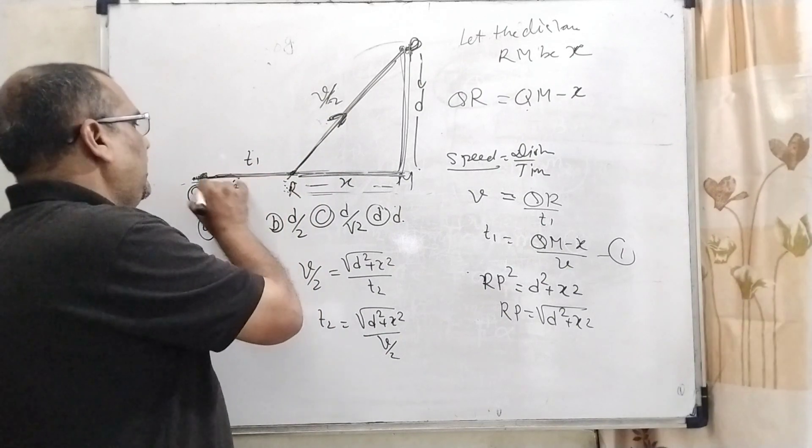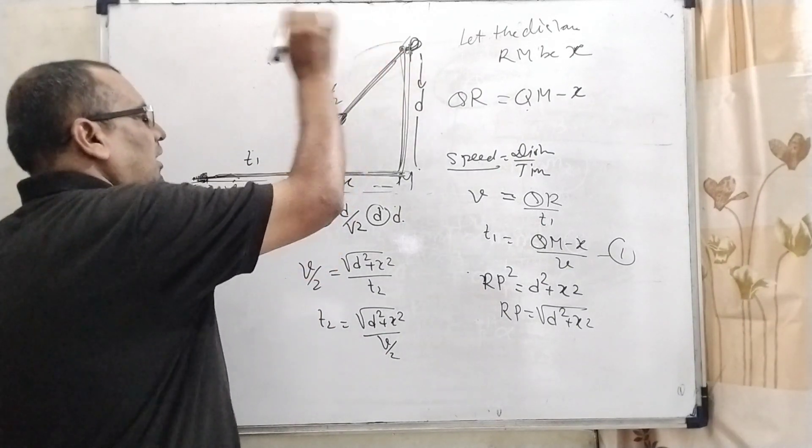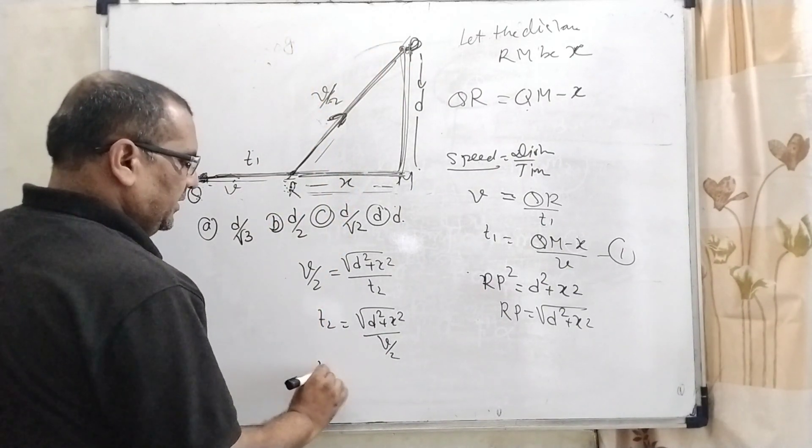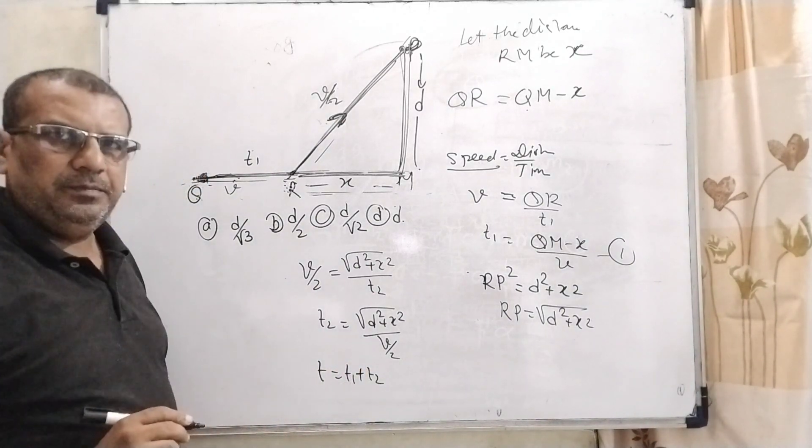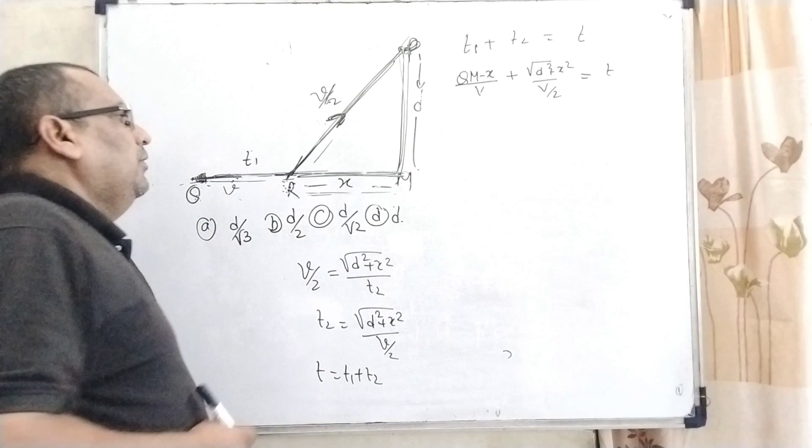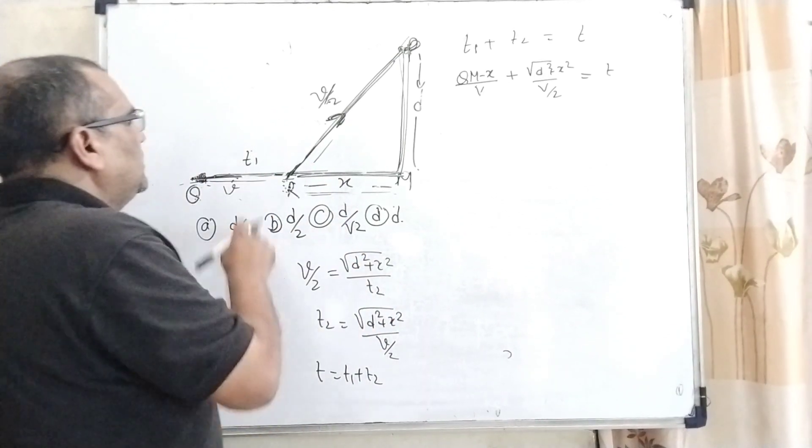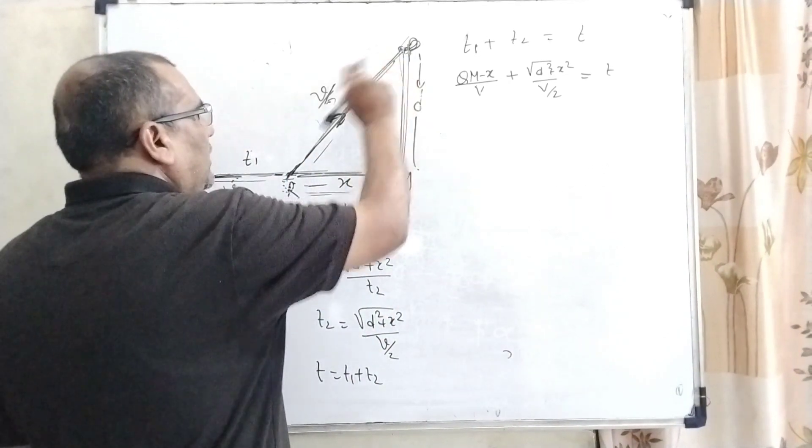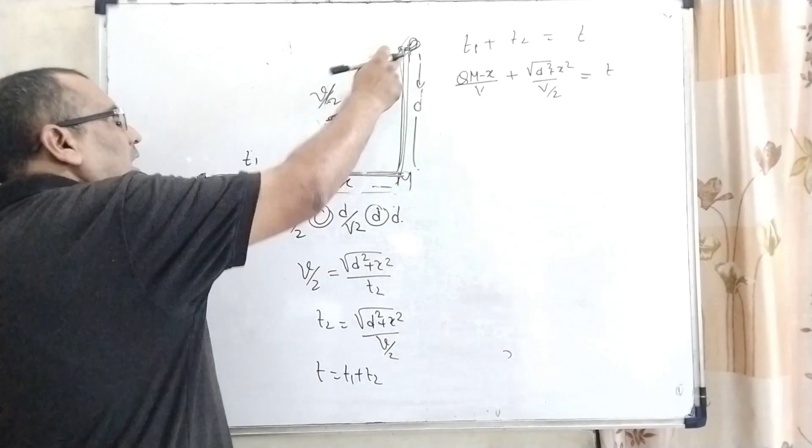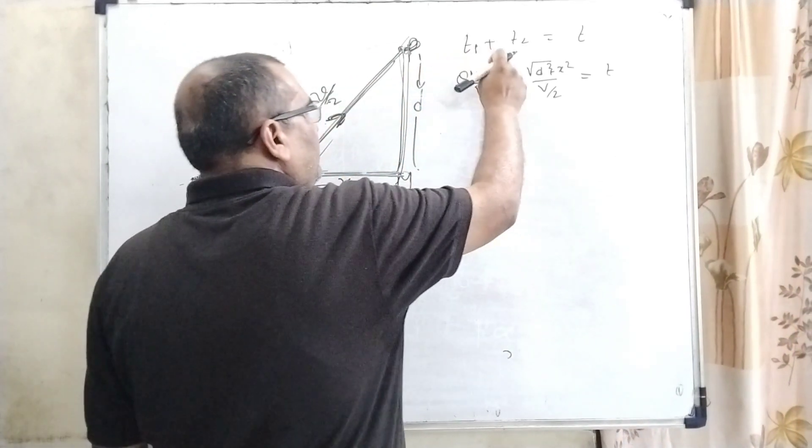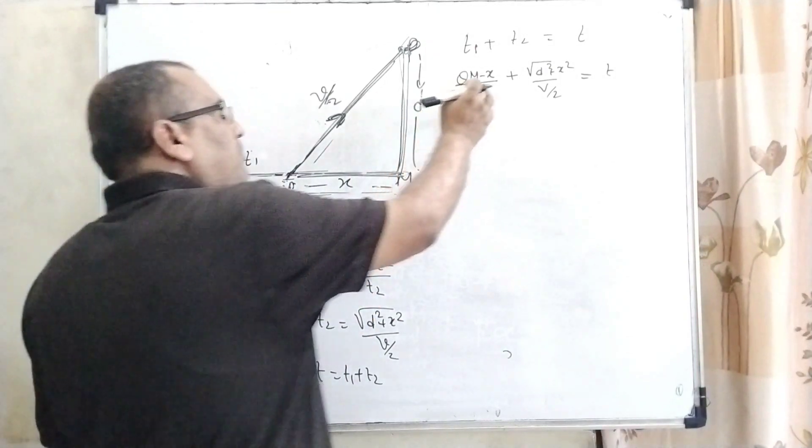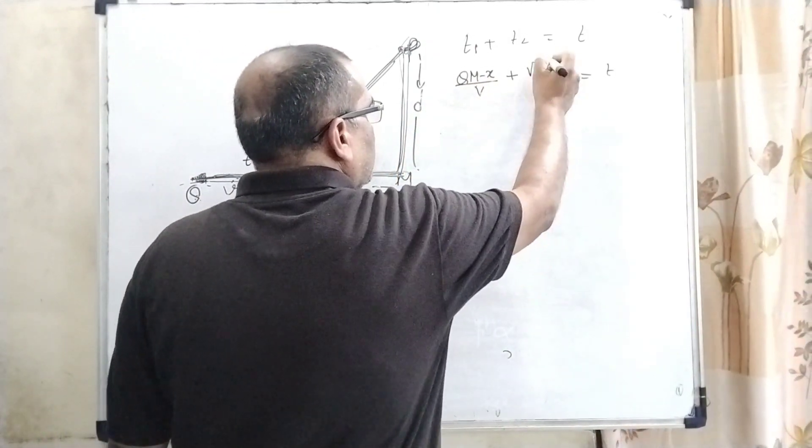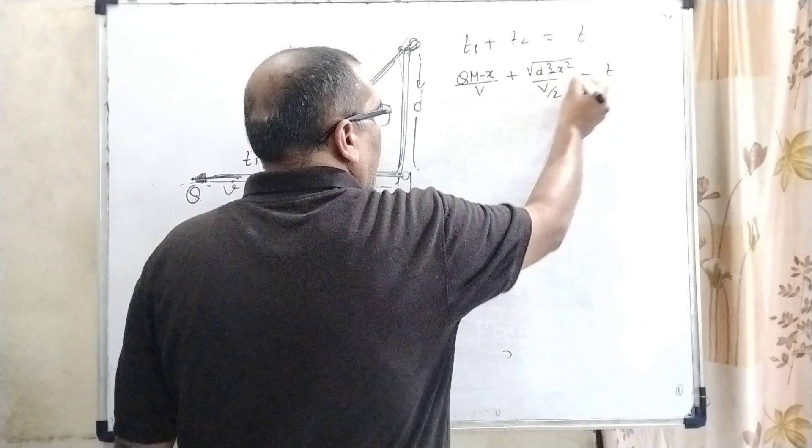Now total time for traveling from Q to R, then R to P, the time taken T equals T1 plus T2. Now we have to find that time. So let us get the total time. T1 plus T2 equals T. Now substitute the value: QM minus x upon V plus root D square plus x square upon V by 2 equals T.